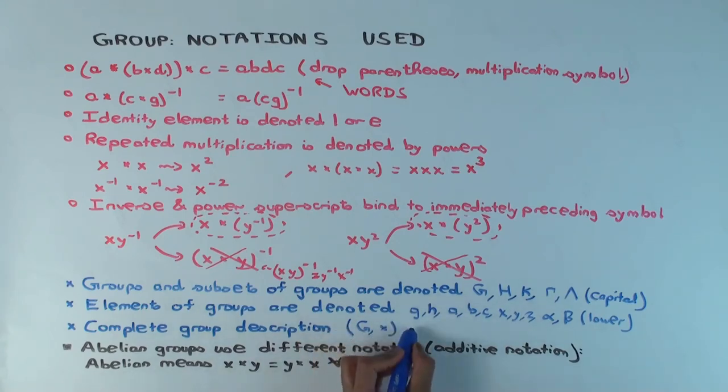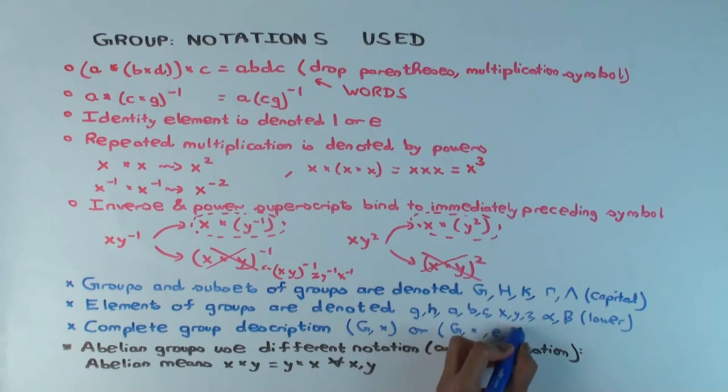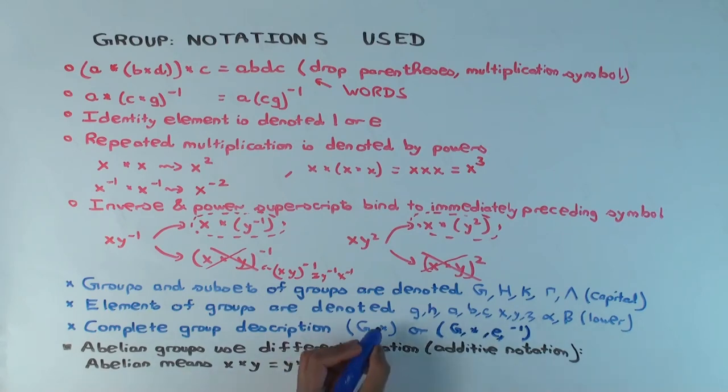But some people want to describe not just the binary operation, they also want to specify the identity element and the inverse map. Because in some versions of the definition of group, the group structure includes not just the binary operation, but also the identity and the inverse map. So, for instance, the additive group of integers in this notation, you write Z comma plus. In this notation, you write Z comma plus comma zero comma minus.